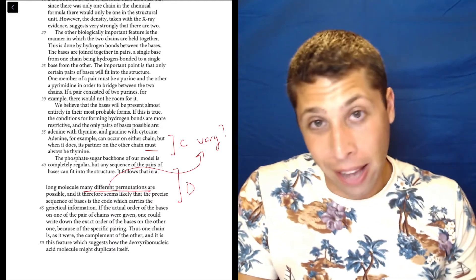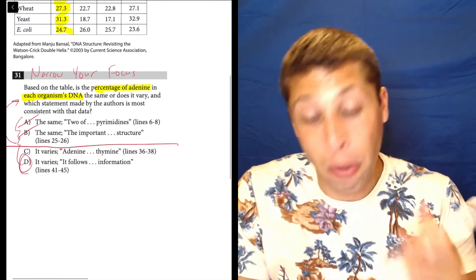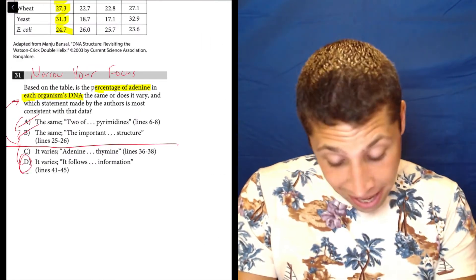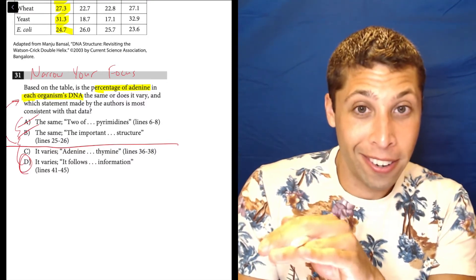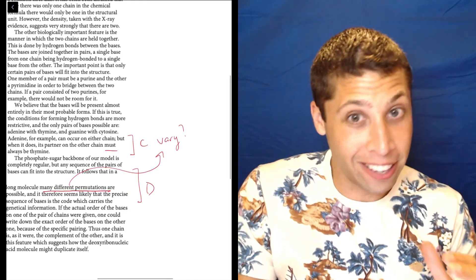So again, we did need to go to the passage, but it was still very easy. We do not need to stress over these questions. They're supposed to be easy. D is the answer because the word vary is in the choice and the word different is in the line reference. Same thing.